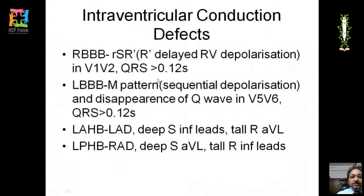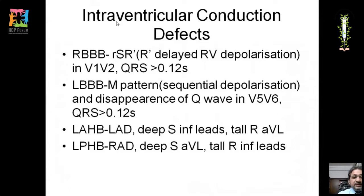In right bundle branch block (RBBB), there is an RSR' pattern in V1 and V2. The normal RS pattern comes from normal left bundle conduction, and the R' represents delayed right ventricular depolarization. The QRS is greater than 0.12 seconds in complete RBBB, and 0.11 to 0.12 seconds in incomplete RBBB.